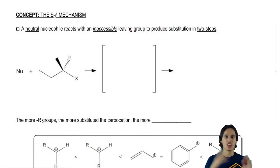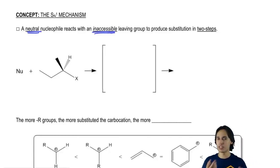So if I were to just generally paraphrase what SN1 is, I would say the following sentence. And what you're going to notice is that quite a few of the keywords that we use for SN2 are going to change. So what it is is that a neutral nucleophile—so that's a big deal—neutral is going to react with an inaccessible leaving group.